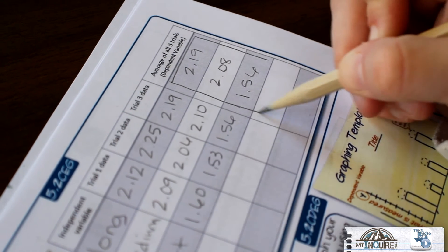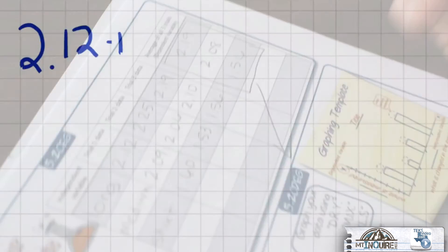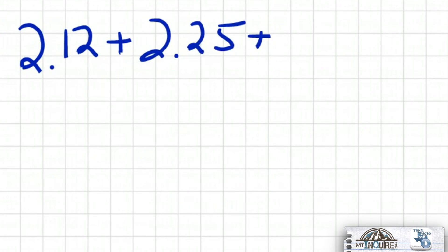We need to average the 3 trials in the right-hand column by adding each time trial and then dividing the total by 3.